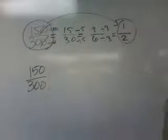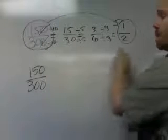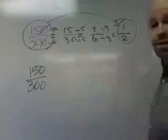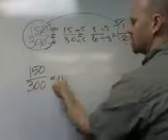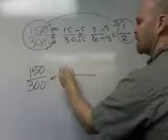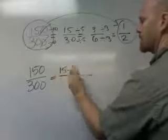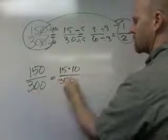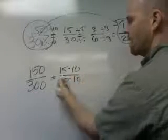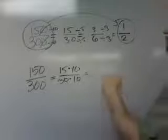Down here we're going to factor it into primes, and once again we better get the answer of 1 half, otherwise we've goofed up someplace. Since these end in 0's, I automatically know this is going to be 15 times 10. And then down here, automatically I know it's going to be 30 times 10. All of these can be factored even further.